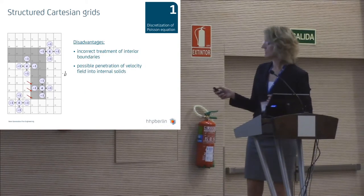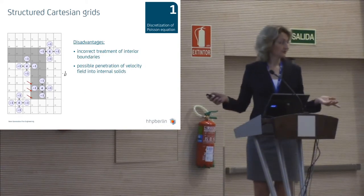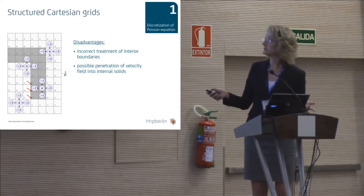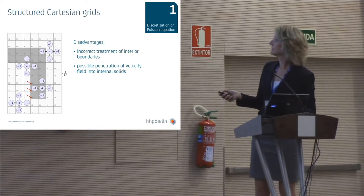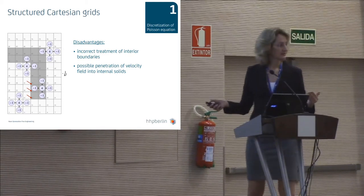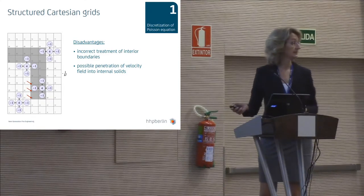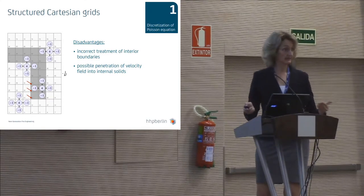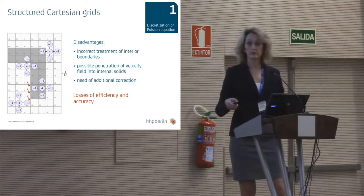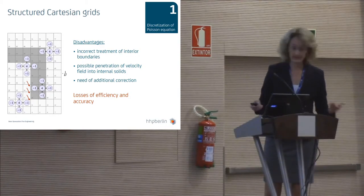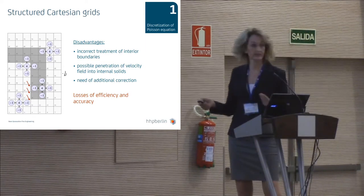But as you might suspect — what about the internal obstructions? We are not able to impose the correct boundary conditions there, so there may be a penetration of the velocity field into those internal solids. We need an additional correction process, which causes additional overhead and may lead to losses of accuracy.